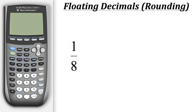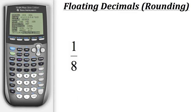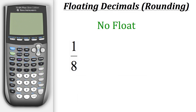Before we do that division, let's go to mode on the calculator so we can see our float settings. The second option down is float. By default, float is turned off, indicated by the word float being highlighted in black.